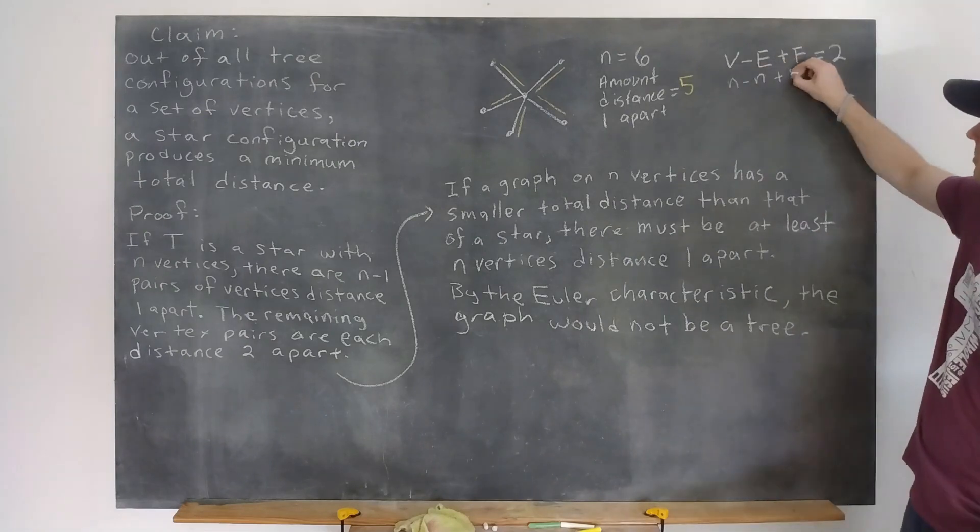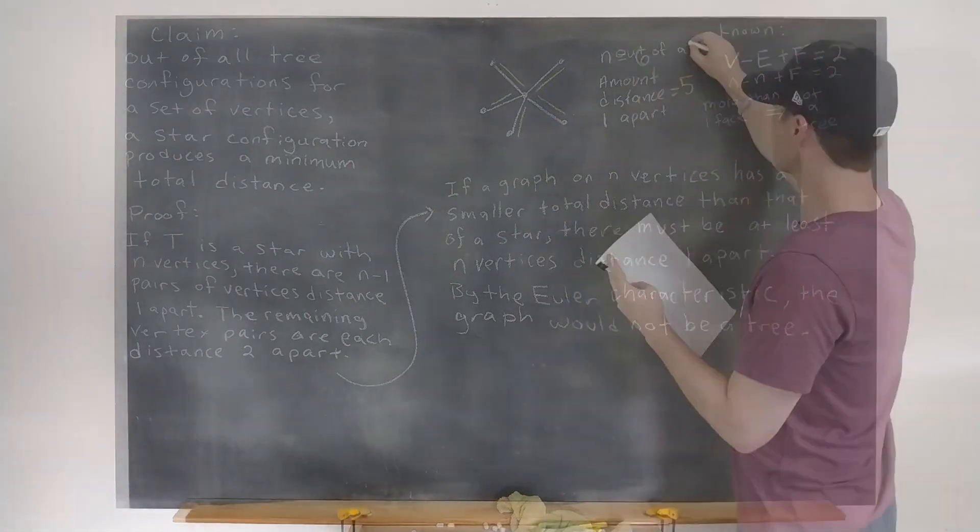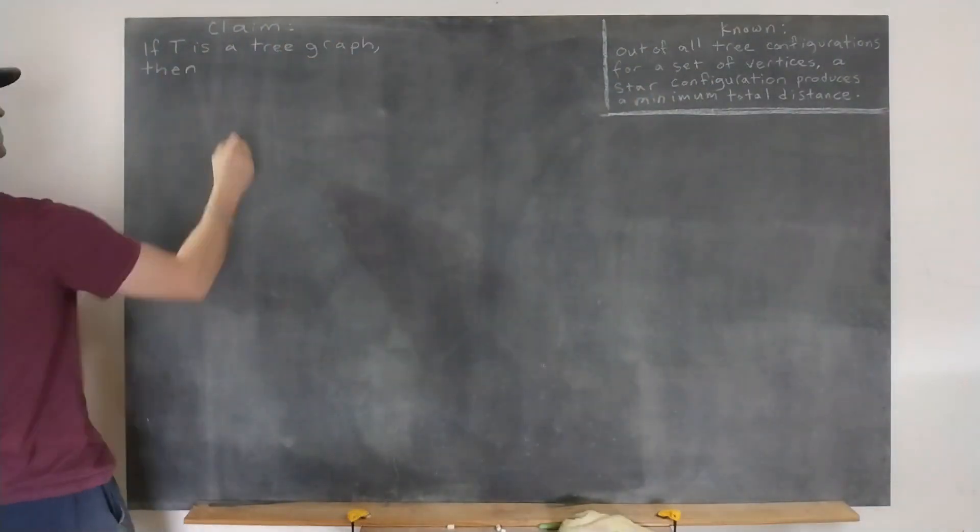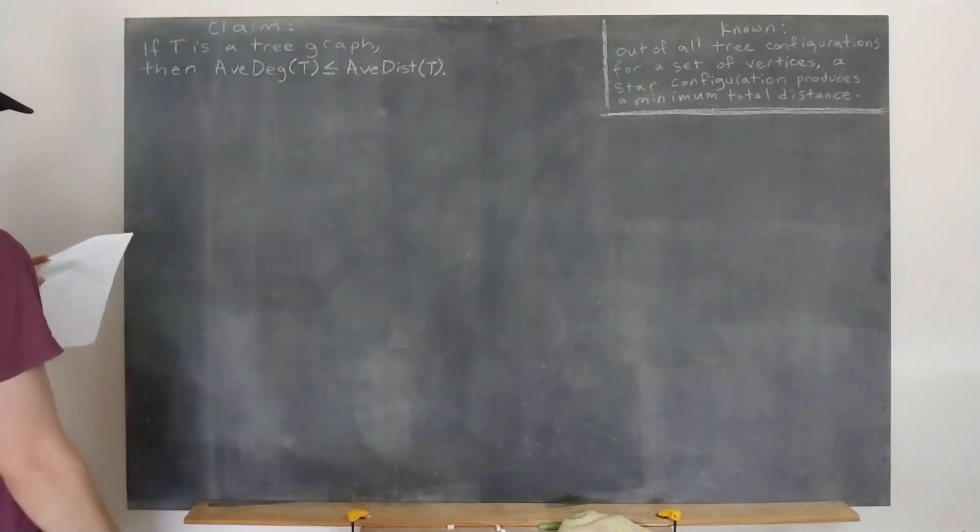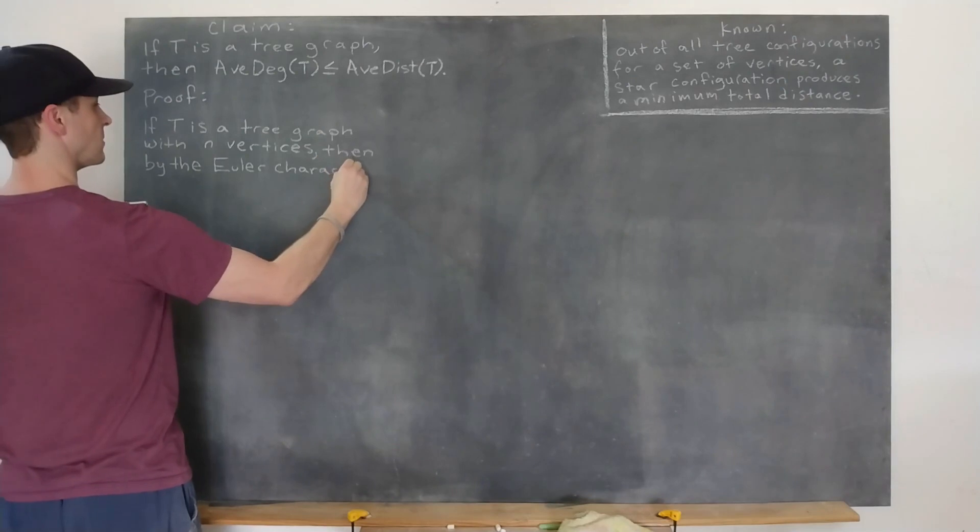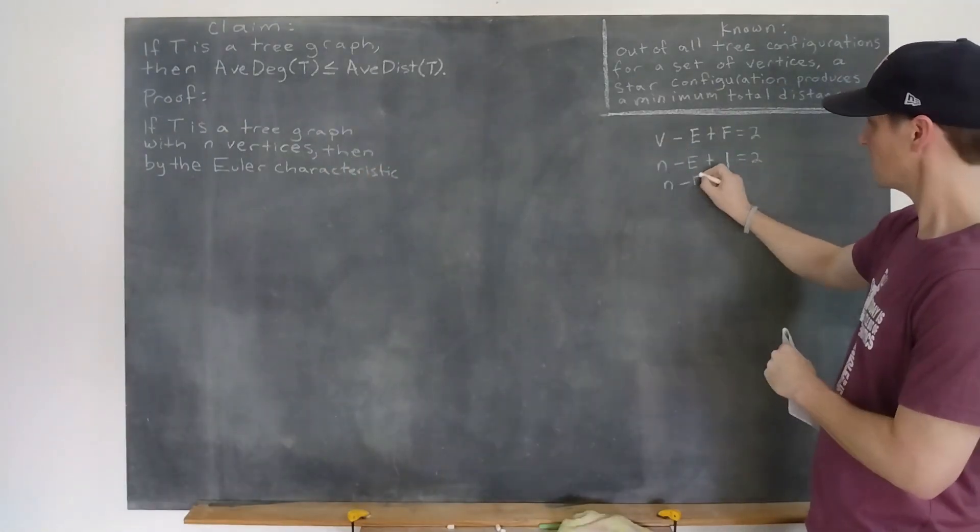We see this with the Euler characteristic formula. And now to the final result. If t is a tree, then its average degree is no more than its average distance. Using here the Euler characteristic again, since t is a tree with n vertices, it must have n-1 edges.